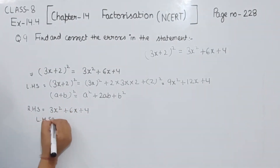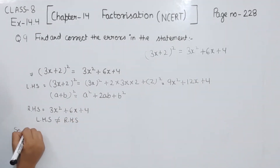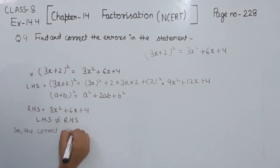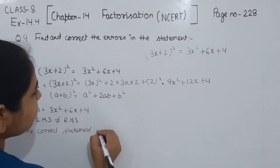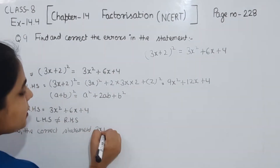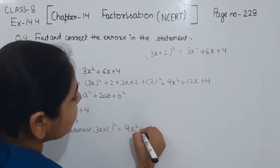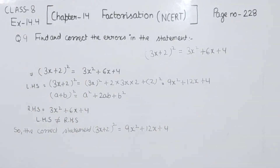That means the left hand side is not equal to the right hand side. Now we have to write the correct statement. So the correct statement is: (3x + 2)² = 9x² + 12x + 4. This is the correct statement for question number 9. In the next video we will start with question number 10.